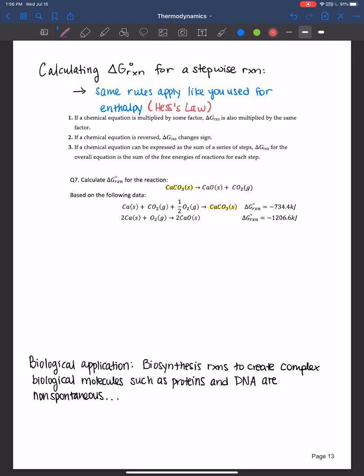I need to reverse it. Which means what am I going to do to the sign of the Gibbs free energy? I'm going to make it positive. So let's go ahead and write that down. We have calcium carbonate - I'm reversing the reaction because eventually I'll need to add it up.